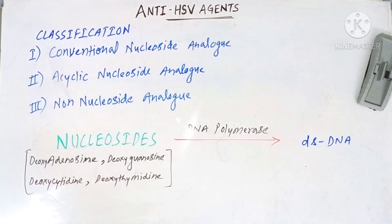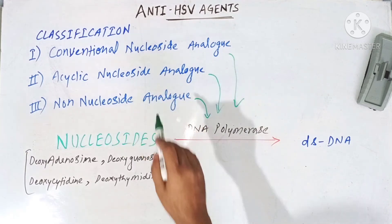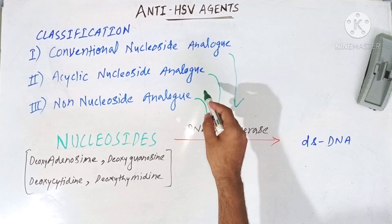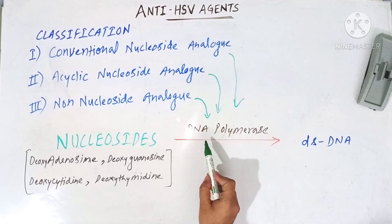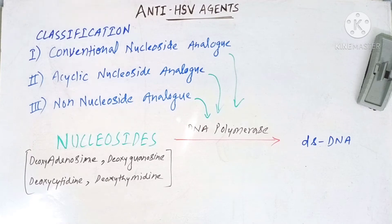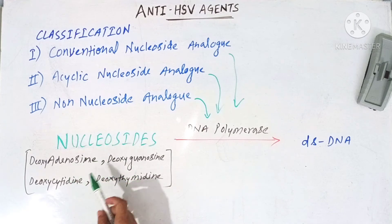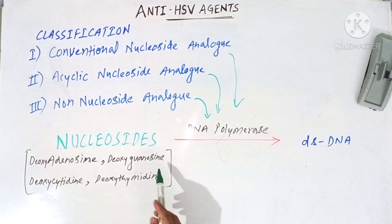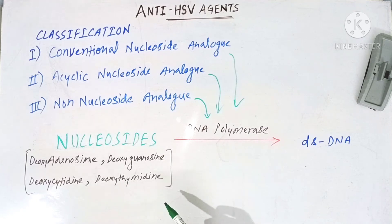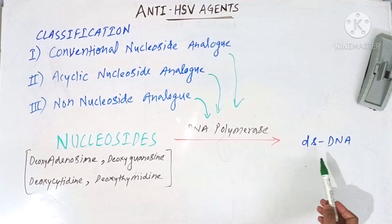All three categories of drugs inhibit the DNA polymerase enzyme. DNA polymerase normally utilizes naturally occurring nucleosides like deoxyadenosine, deoxyguanosine, deoxycytidine, and deoxythymidine to form nucleotides, and those nucleotides are later converted into double-stranded DNA.